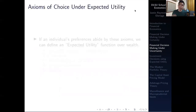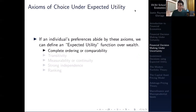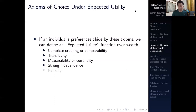Let's discuss the axioms of choice under expected utility. If an individual's preferences abide by these axioms, we can define an expected utility function over wealth. The function can exist as long as we obey these certain axioms of choice — properties you've seen before, now expressed in terms of expected utility. The axioms are: complete ordering or comparability, transitivity, measurability, continuity, strong independence, and ranking.